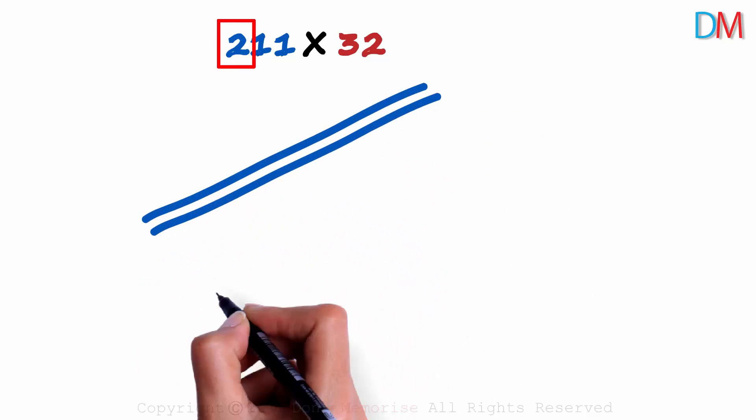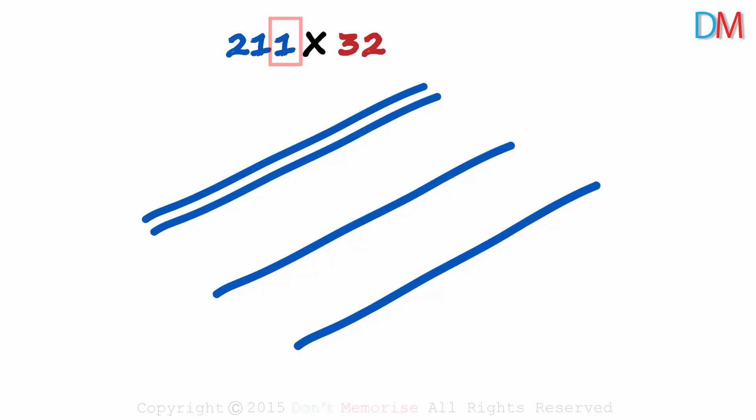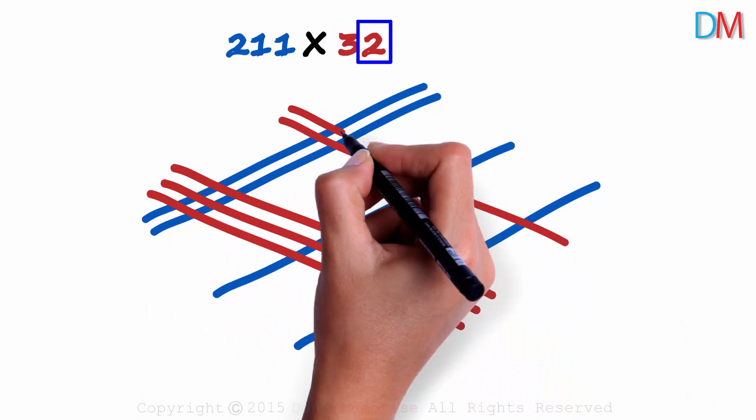Two lines for two. One line for one. And another line for one. This is 211. What about 32? Three lines for three and two lines for two.